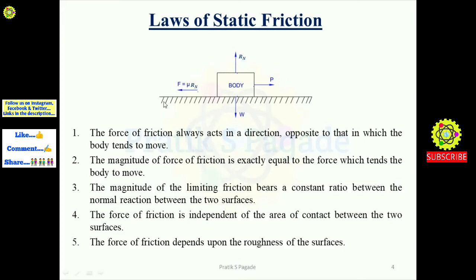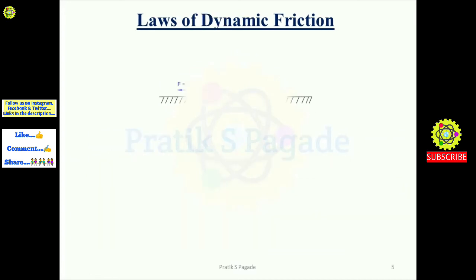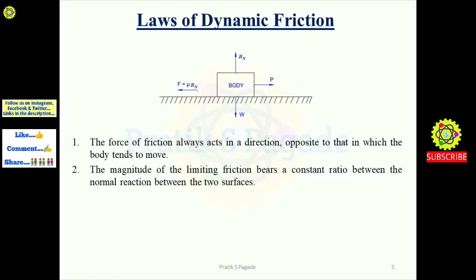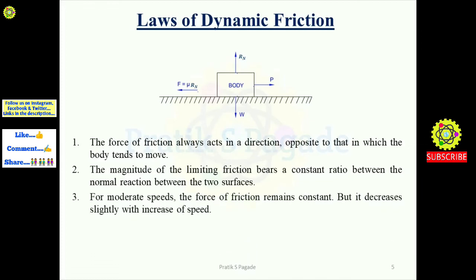Laws of dynamic friction: First, the force of friction always acts in a direction opposite to that in which the body moves. Second, the magnitude of limiting friction bears a constant ratio to the normal reaction between the two surfaces. Third, for moderate speeds the force of friction remains constant, but it decreases slightly with an increase in speed — when we increase the speed of the body, the magnitude of the frictional force decreases.